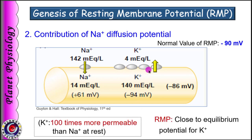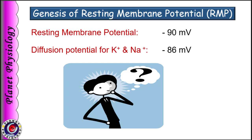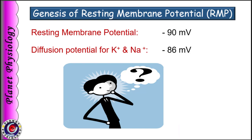This value is closer to the equilibrium potential for potassium, because at rest the membrane is 100 times more permeable to potassium than sodium. Thus, it is not just the concentration gradient but also membrane permeability to the ion that plays an important role in deciding the value of resting membrane potential. This is why in the picture, only one leak channel is represented for sodium while four are represented for potassium, and the arrow is thicker for potassium efflux while thinner for sodium influx. If you note, resting membrane potential is –90 mV but we obtained –86 mV, so there is still a difference of –4 mV — which factor contributes to make up this difference?